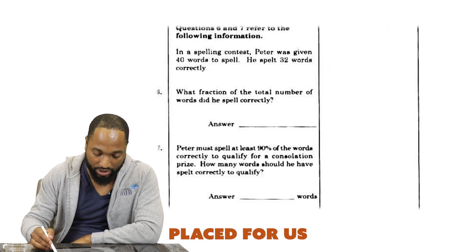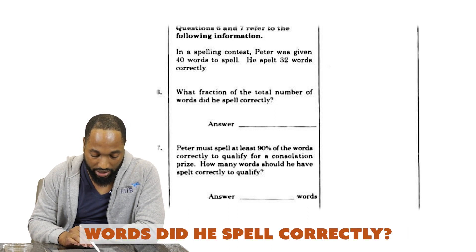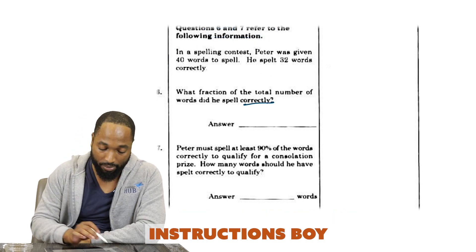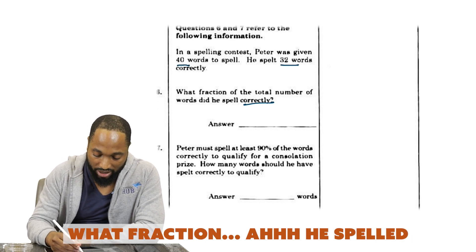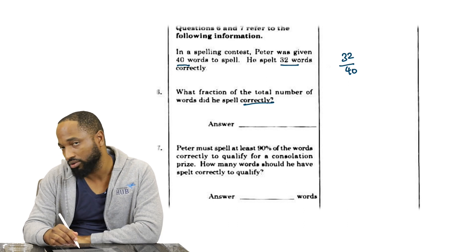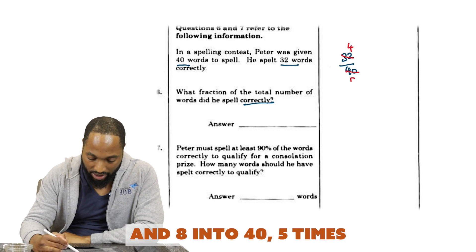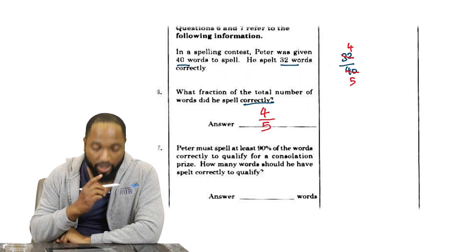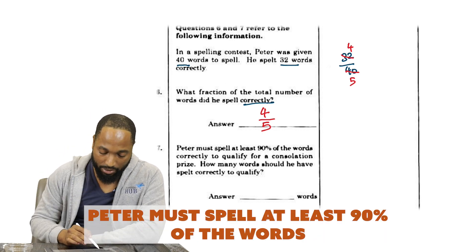Two more. Number six: what fraction of the total number of words did he spell correctly? There's a little piece to read here. Questions six and seven refer to the following information. In a spelling test, Peter was given 40 words to spell. He spelled 32 words correctly. What fraction? He spelled 32 out of 40 correctly. 8 could go into both of these numbers—8 could go into 32 four times and 8 could go into 40 five times. I was able to reduce it quick. 4/5 is the way to go. We usually express fractions in their simplest form.